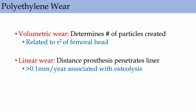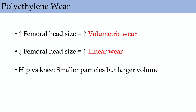Types of poly wear: volumetric wear is dependent on femoral head size (proportional to R-squared) — larger head means more volumetric wear and more particles. Linear wear is the distance the head migrates into or penetrates the liner; greater than 0.1 mm per year is associated with osteolysis. Increased head size gives more volumetric wear; decreased head size gives more linear wear. Hip particles are smaller than knee particles but come in larger volume.